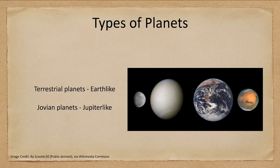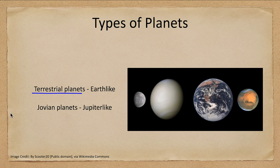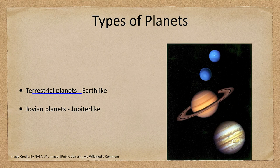We have two types of planets. We have the terrestrial or Earth-like planets, which includes Mercury, Venus, Earth, and Mars. These all have nice solid surfaces where we could land. The other type of planet is the Jovian planet — Jupiter-like — which includes Jupiter, Saturn, Uranus, and Neptune. None of these have a solid surface; they're all very gaseous and icy.